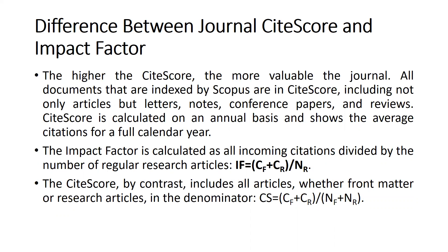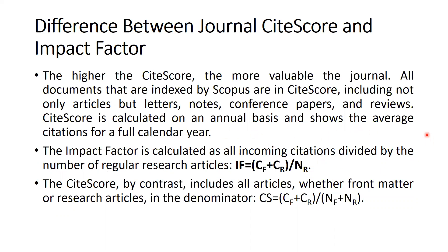Impact Factor is calculated as all incoming citations divided by the number of regular research articles. The formula is: Impact Factor = (CF + CR) / NR, where NR is the number of regular research articles, which includes both regular research articles and review articles.